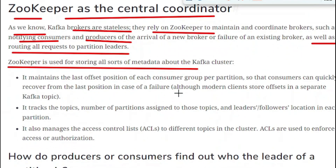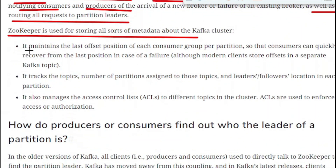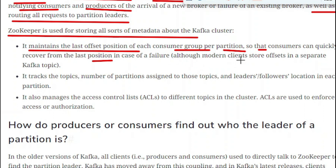ZooKeeper is used for storing all sorts of metadata about the Kafka cluster. It maintains the last offset position of each consumer group per partition, so that a consumer can quickly recover from the last position in case of any failure. Although modern clients store the offset in a separate Kafka topic, ZooKeeper is still used to maintain the last offset position of each consumer group per partition.